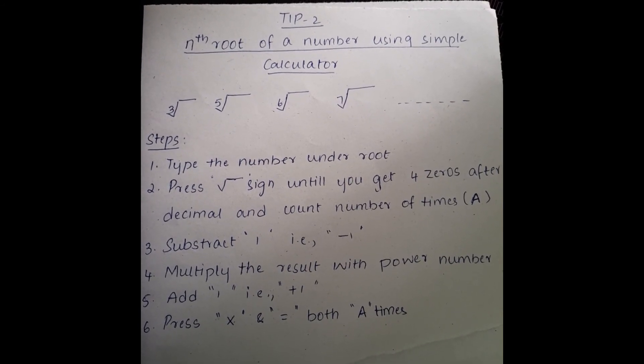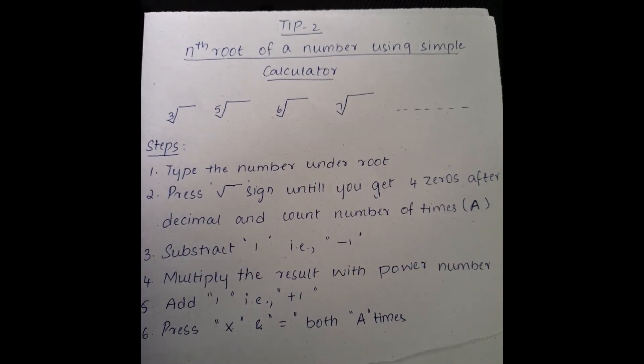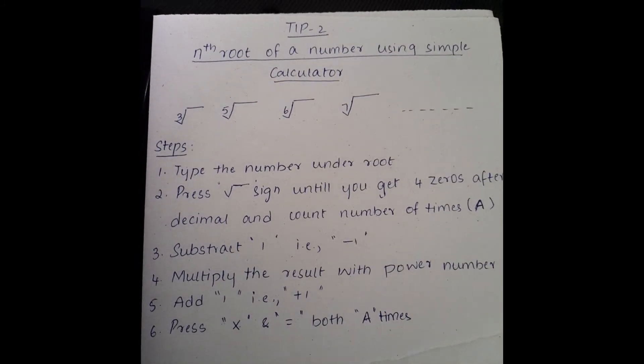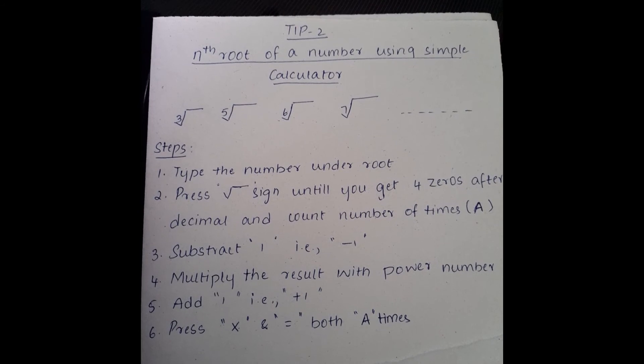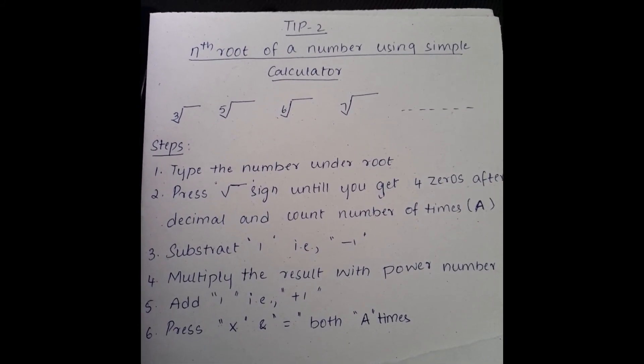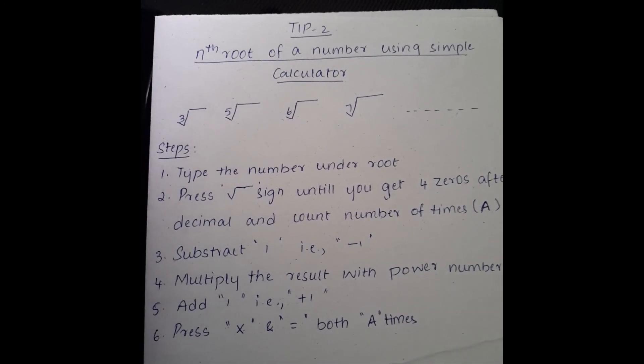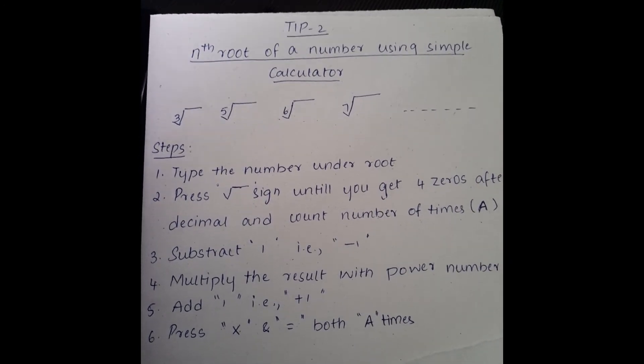And in the fifth step, you need to add 1. That is, plus 1. And in the final step, you need to press into and equals to. That is, multiplication sign and equal to sign. Both, you should repeat both. Not only into, equal to, equal to. It is into, equal to.